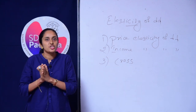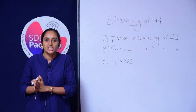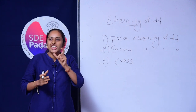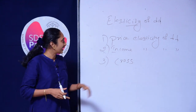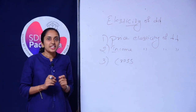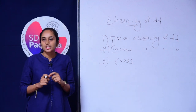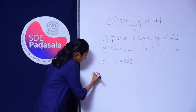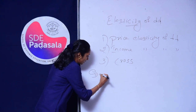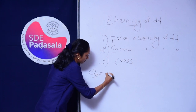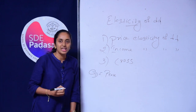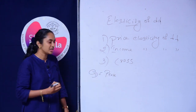This information — as to how much or to what extent quantity demanded changes in response to a change in price — is given by the concept of Price Elasticity of Demand. We can calculate Price Elasticity of Demand using the formula: Elasticity of Demand equals percentage change in quantity demanded divided by percentage change in price.